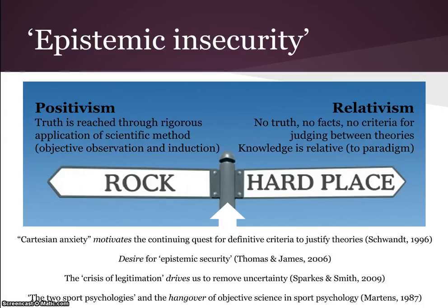I then talked about epistemic insecurity, and the notion that Grounded Theory can provide some sort of security. In social sciences, particularly psychology, people have moved away from naive positivist approaches but don't want to go into full-blown relativism either. Grounded Theory gives people a nice halfway point — it feels rigorous, it feels like there's a system, but it acknowledges we can improve our knowledge if we use certain criteria, standards, and procedures, without going all the way to full-blown relativism.